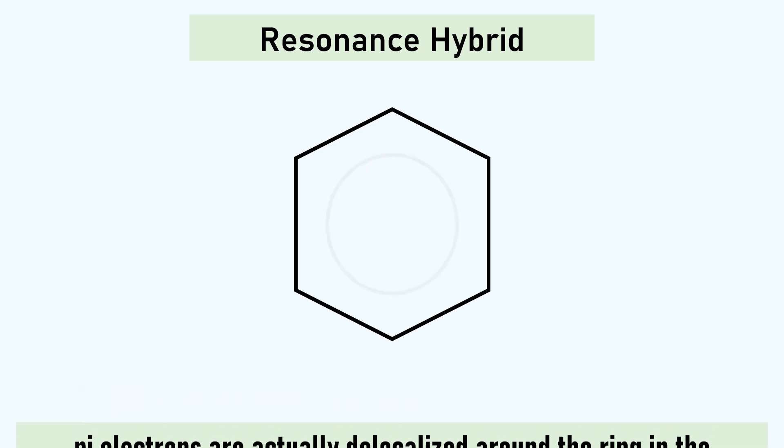Some textbooks will represent the hybrid with a circle in the center of the hexagon ring, with the circle representing the six pi electrons.